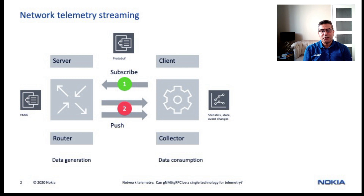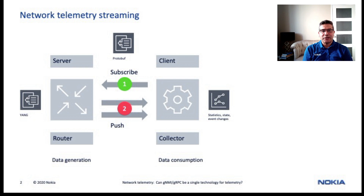The data is then streamed over transport protocols whenever it becomes available in the router. The outcome of the streaming process is a collection of data that can be used by many applications such as reporting, monitoring, alerting, or troubleshooting. The format of the data is different from the format collected by other methods, but the value or content can be the same as the one collected by a different protocol or different method.